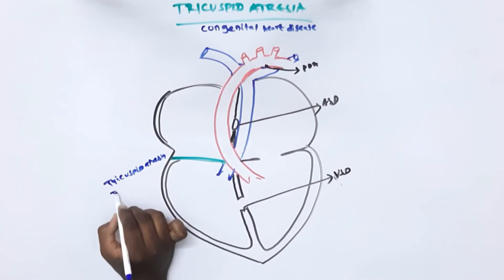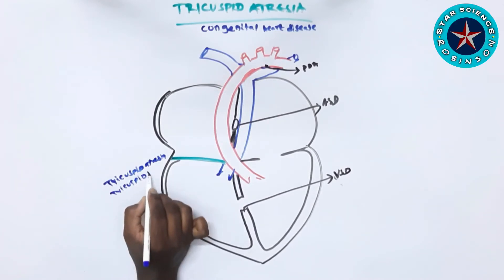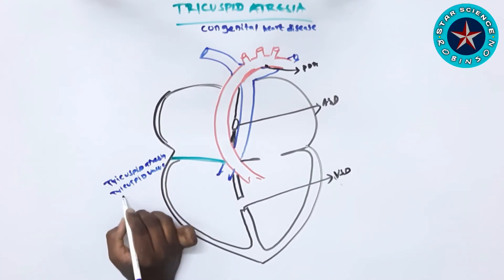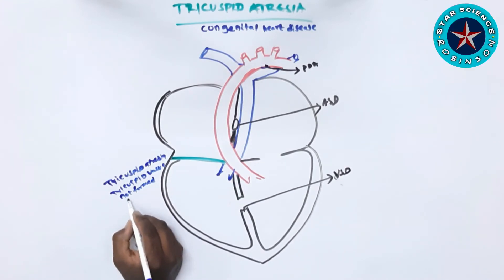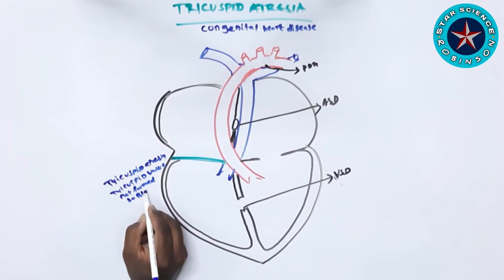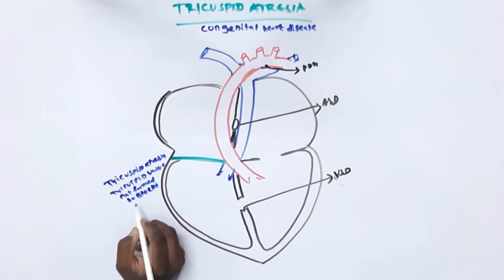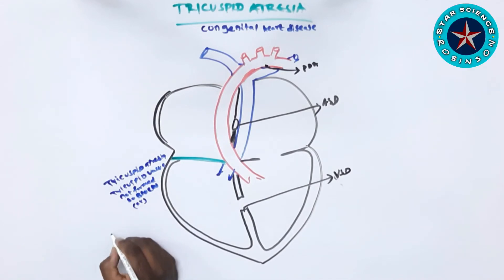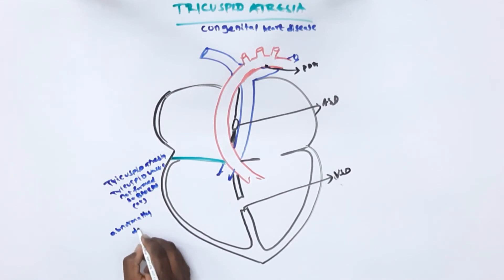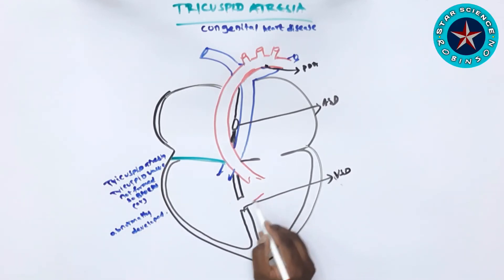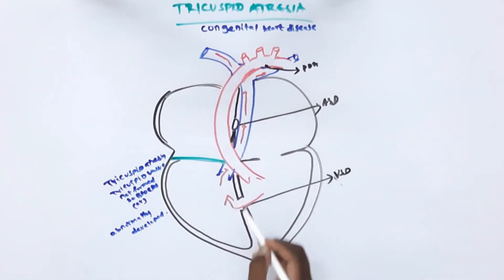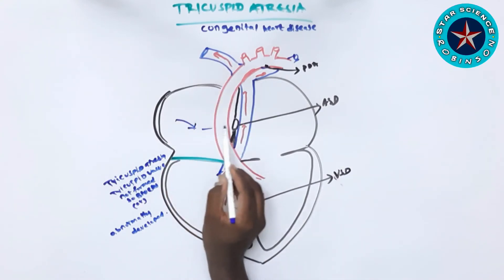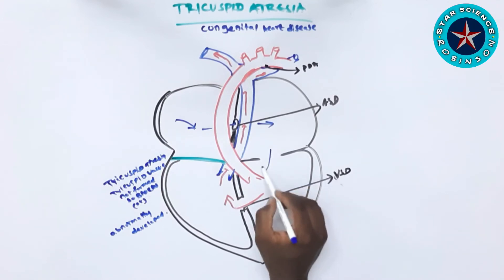We are now looking at the green line in the diagram. The tricuspid valve is closed — it is not formed. So the blood from the right atrium will not flow to the right ventricles because it is blocked due to the absence or abnormal development of the tricuspid valve. The blood instead flows from the left ventricle to the right ventricle through the ventricular septal defect, and from there to the pulmonary artery, reaching the lungs.